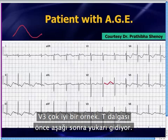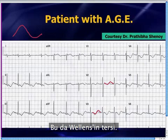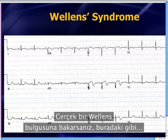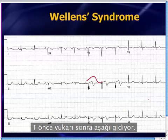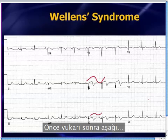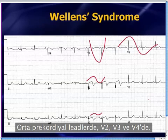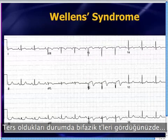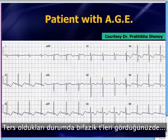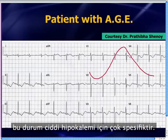V3 is an even better example — the T-wave goes down and then up, which is a reverse of Wellen's. If you look at a real case of Wellen's, the T-wave goes up and then it goes down. Wellen's typically gives you either deeply inverted T-waves or a biphasic T-wave pattern in those mid-precordial leads V2, V3, and V4. When you see the biphasic T-wave pattern occurring in the reverse scenario — going down and then up — that actually turns out to be very specific for severe hypokalemia.